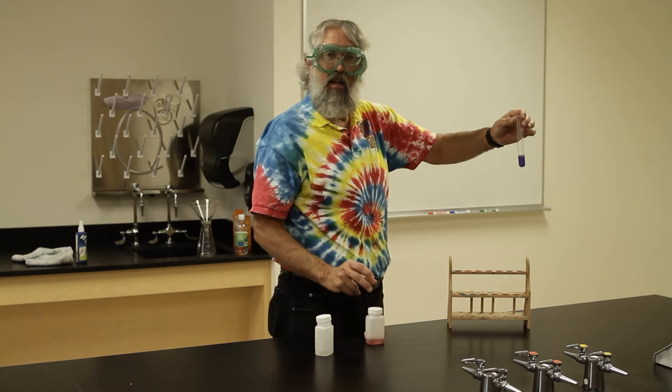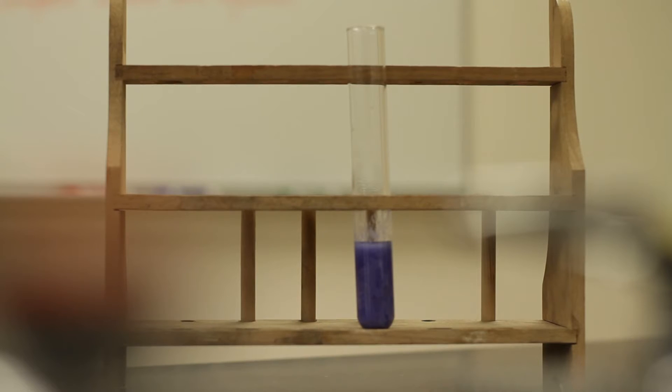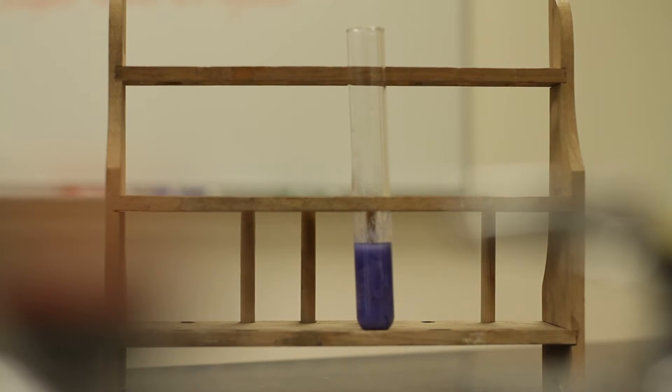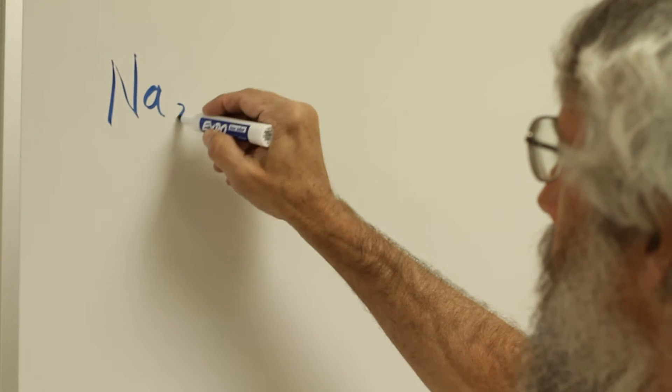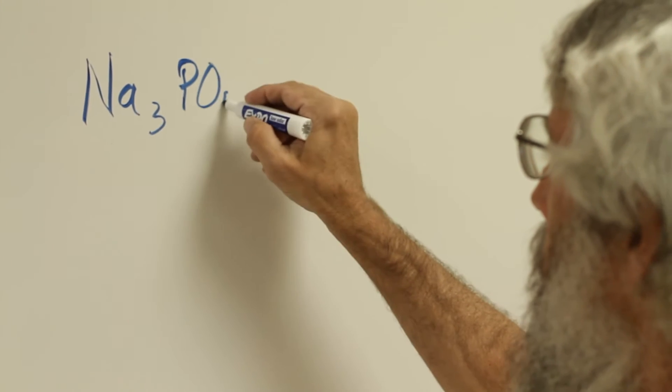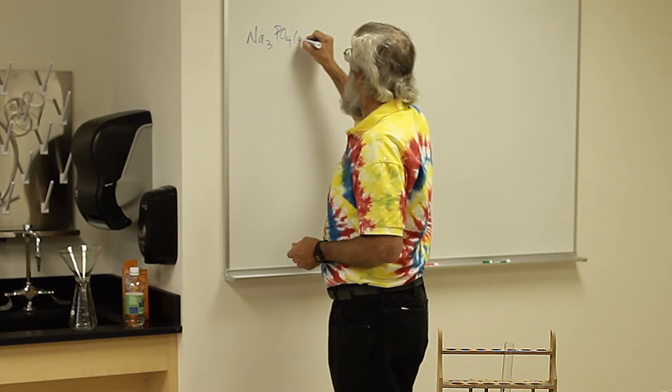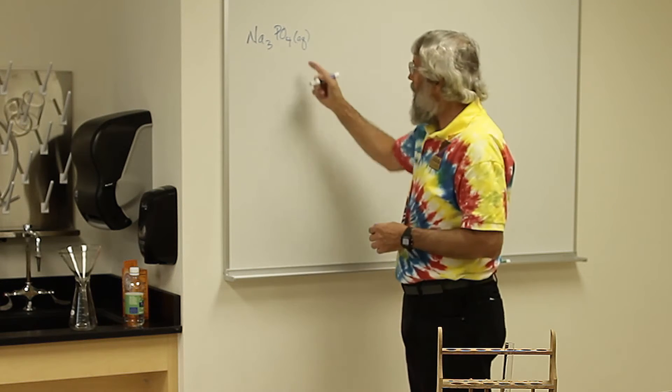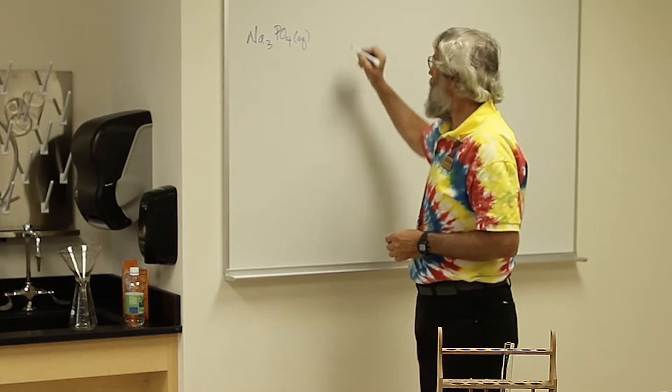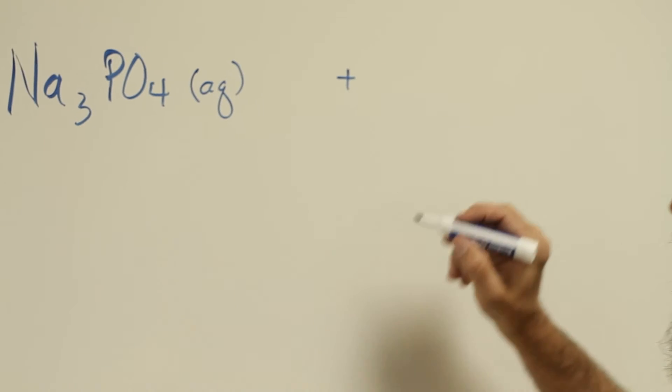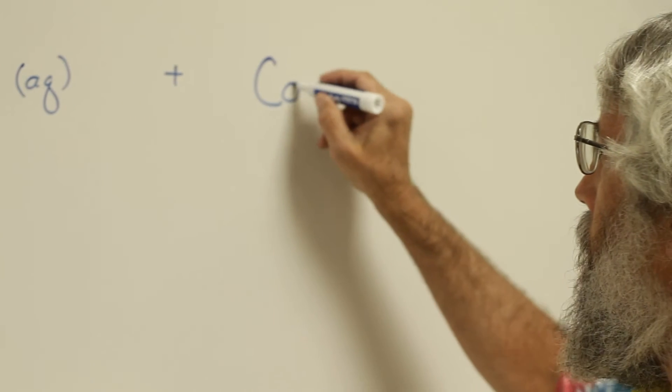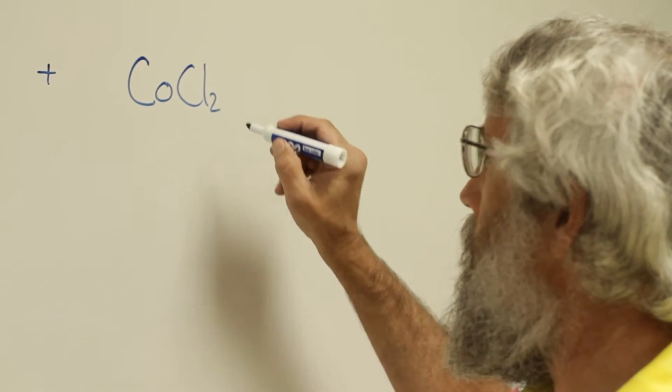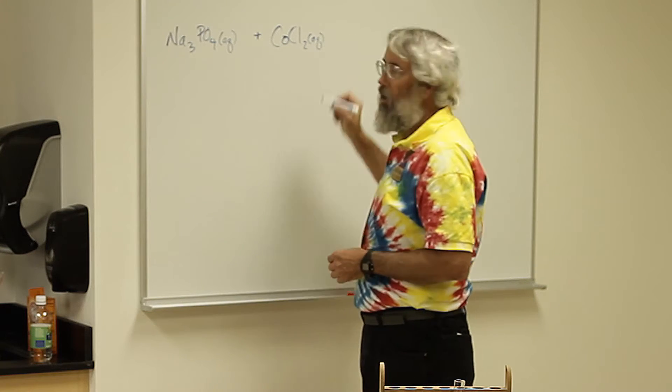So there's the reaction, now let's look at it on the board. Sodium phosphate has the formula Na3PO4, and because it's in solution in water we write the symbol AQ. Cobalt chloride is CoCl2. It too is present in aqueous solution.